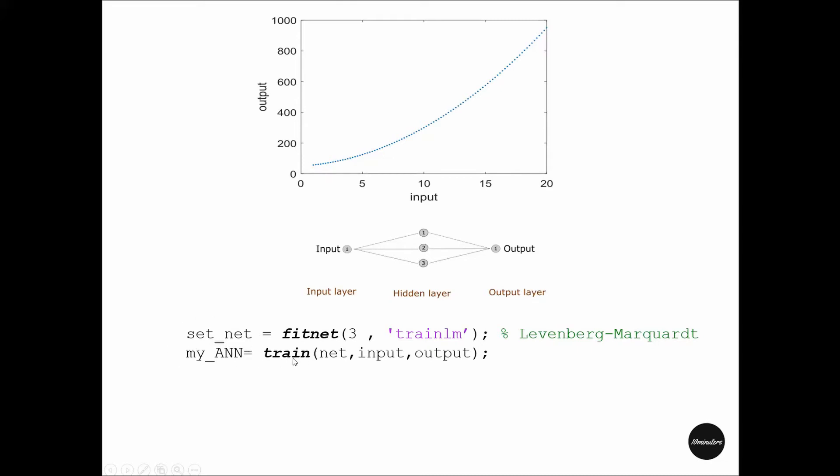Now his network setting is complete. He can train this network using the train function, providing the settings, all 100 x coordinates, and all 100 y coordinates, then run.